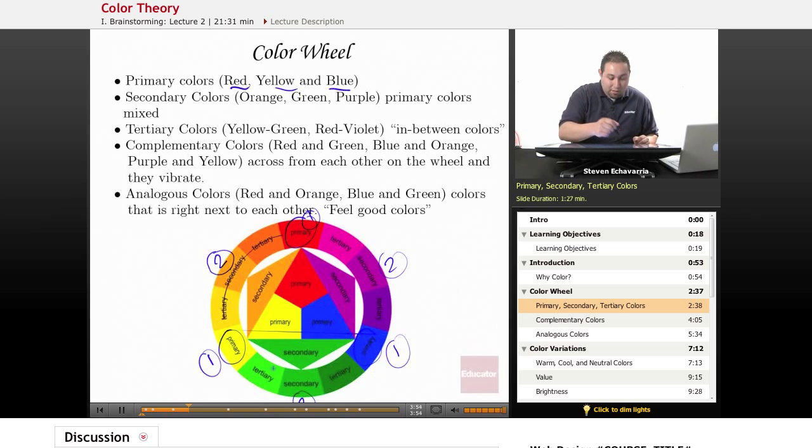And then so on and so forth. If you mix between these two, you'll get your tertiary color, which they call the in-between colors. And you're going to have different variations of color.